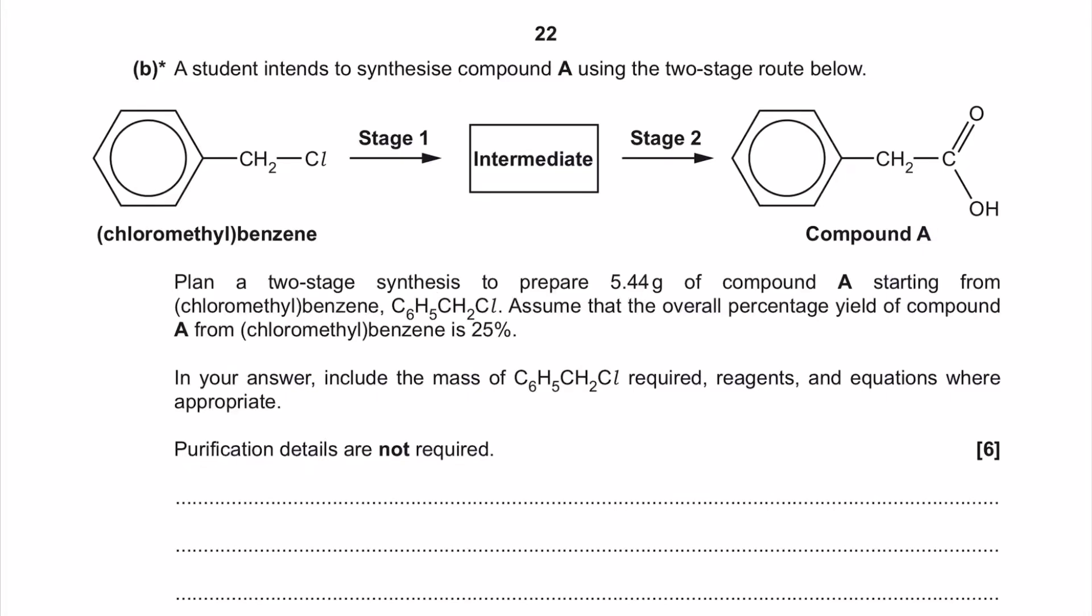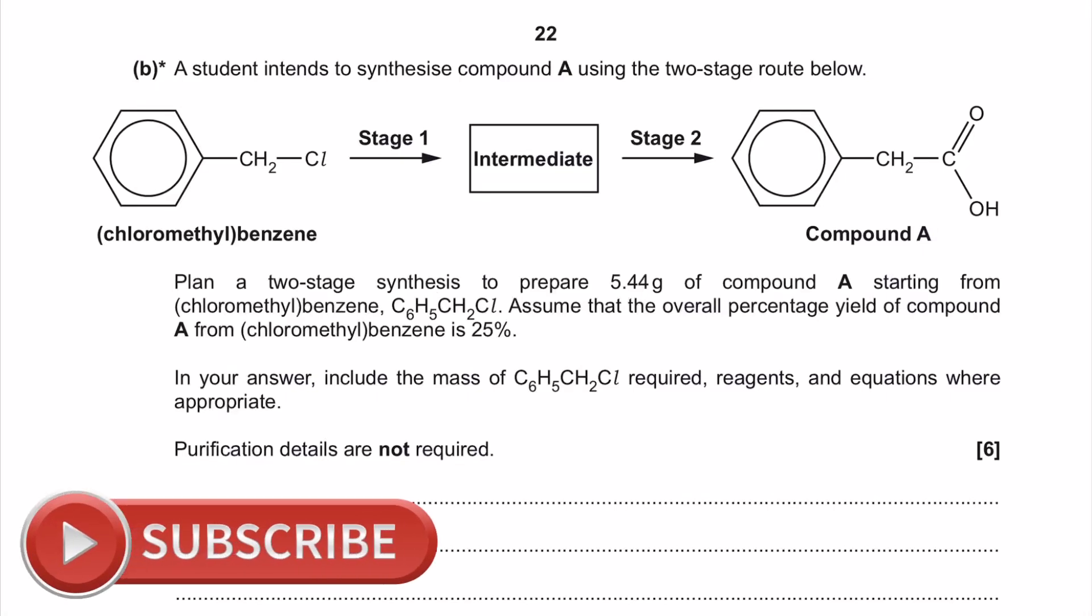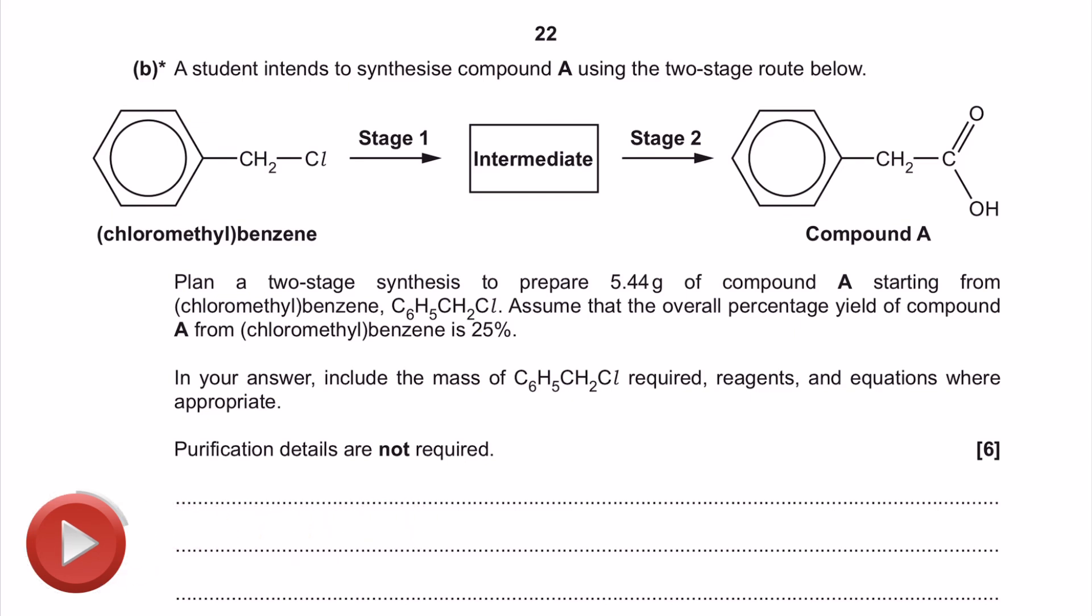This organic chemistry themed level of response exam question from the OCR A specification has a topic in it which is incredibly important. While it might not be as shiny and obvious as a spectroscopy exam question or as mini whiteboard friendly as curly arrow mechanisms, the percentage yield component of this particular level of response exam question is incredibly common in the OCR A papers, so you need to make sure you've got this skill in your wheelhouse ahead of the summer exams.